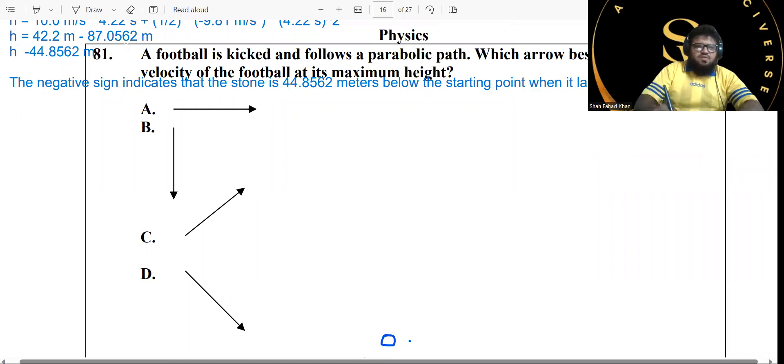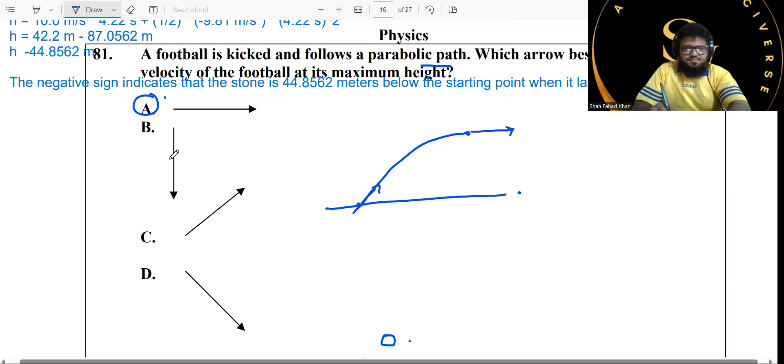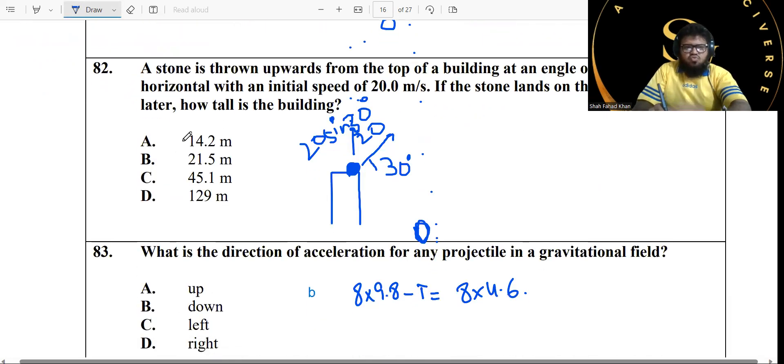We didn't do the physics section yet. Let's start off with the physics section. Bismillah Rahman Rahim. A football is kicked and follows a parabolic path. Which arrow best represents the velocity of the football at its maximum height? You have a parabolic path. The football is going up, it's gonna reach the maximum height right here. At maximum height, the velocity is going to be completely horizontal. Option B is correct.